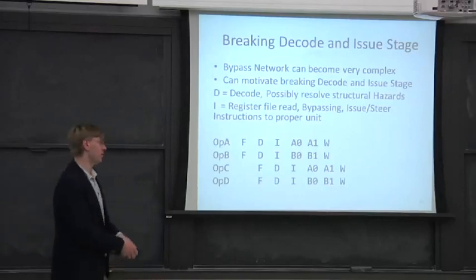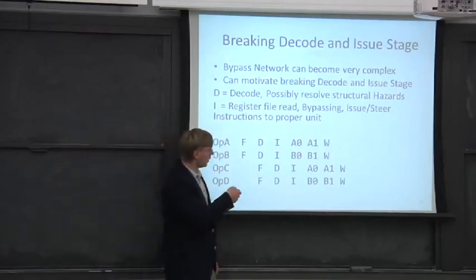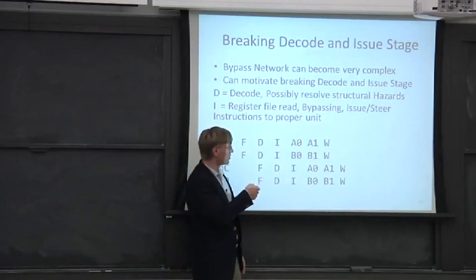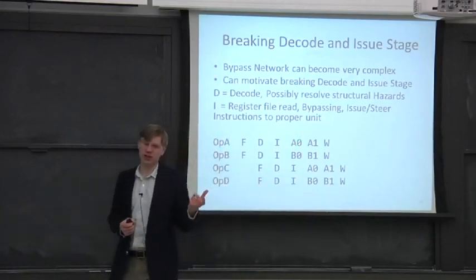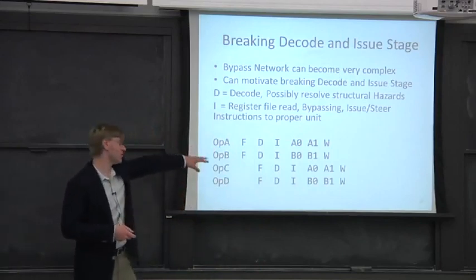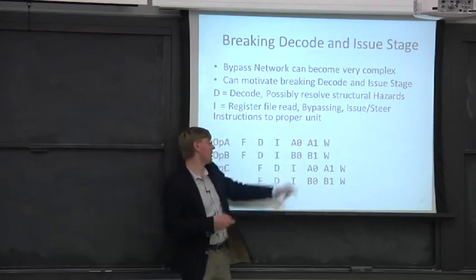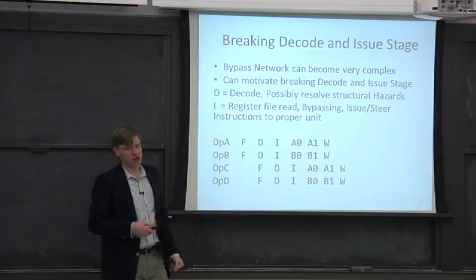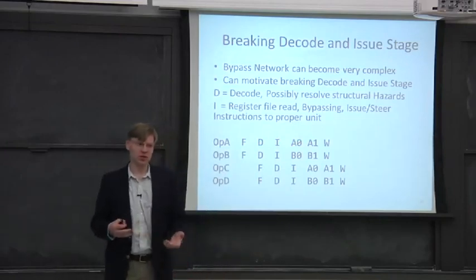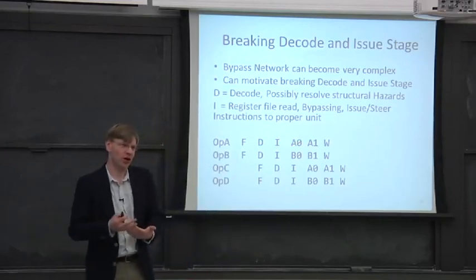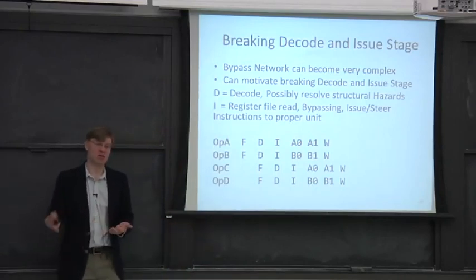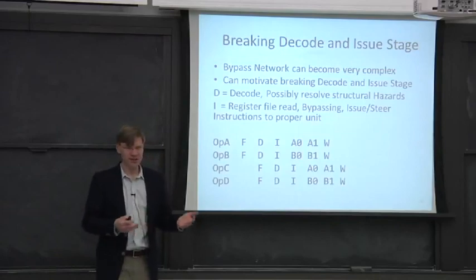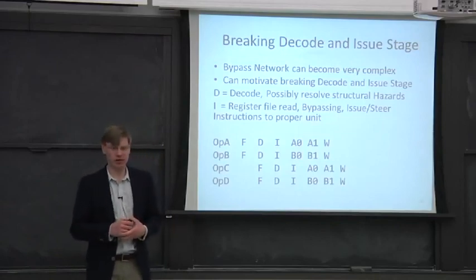So branches, if we know that the branch gets resolved out of the first execute stage of the pipe, or in our two pipe here, it's out of A0, we've just increased the branch cost by one. So now something that would have branched, or a branch mispredict penalty of, let's say, two cycles just became three cycles. And this can start hurting your performance. And this really starts to hurt your performance as you start to go wide.